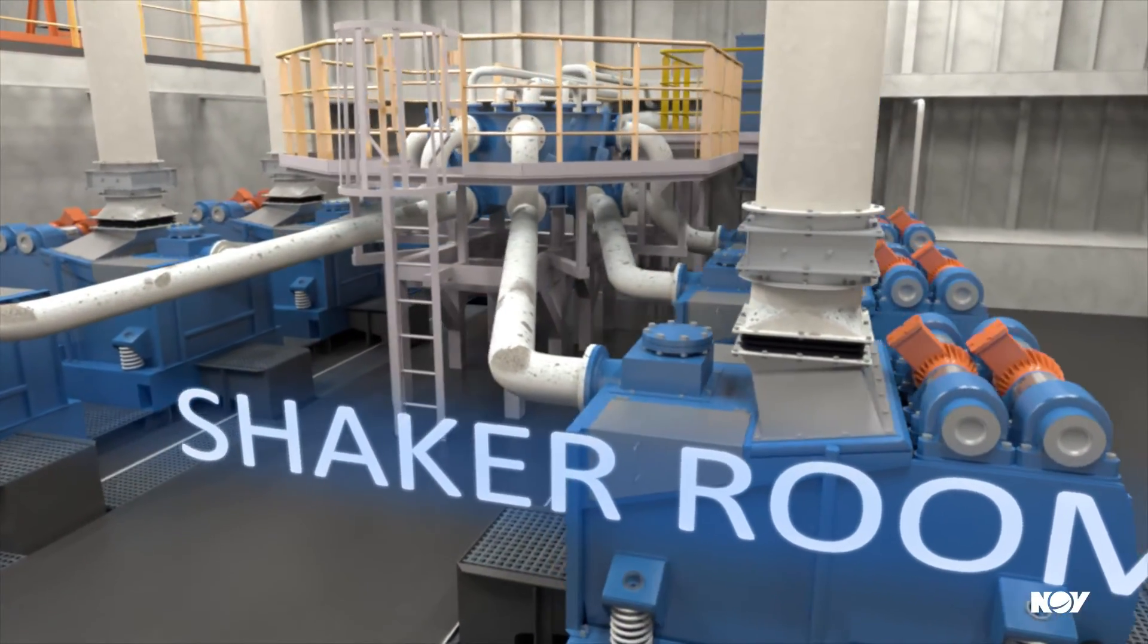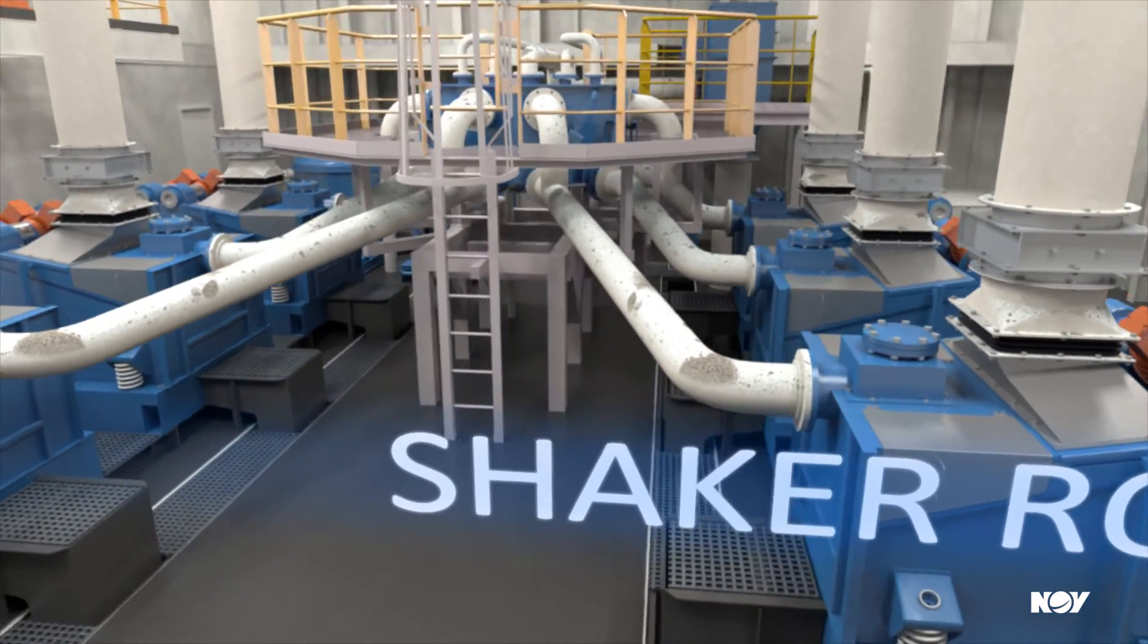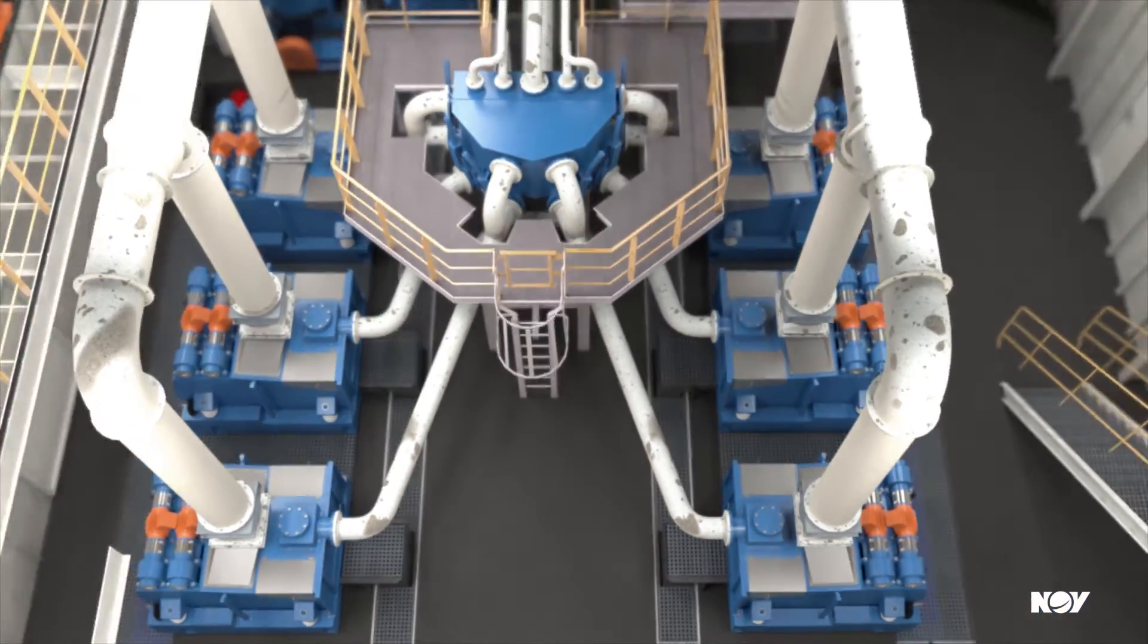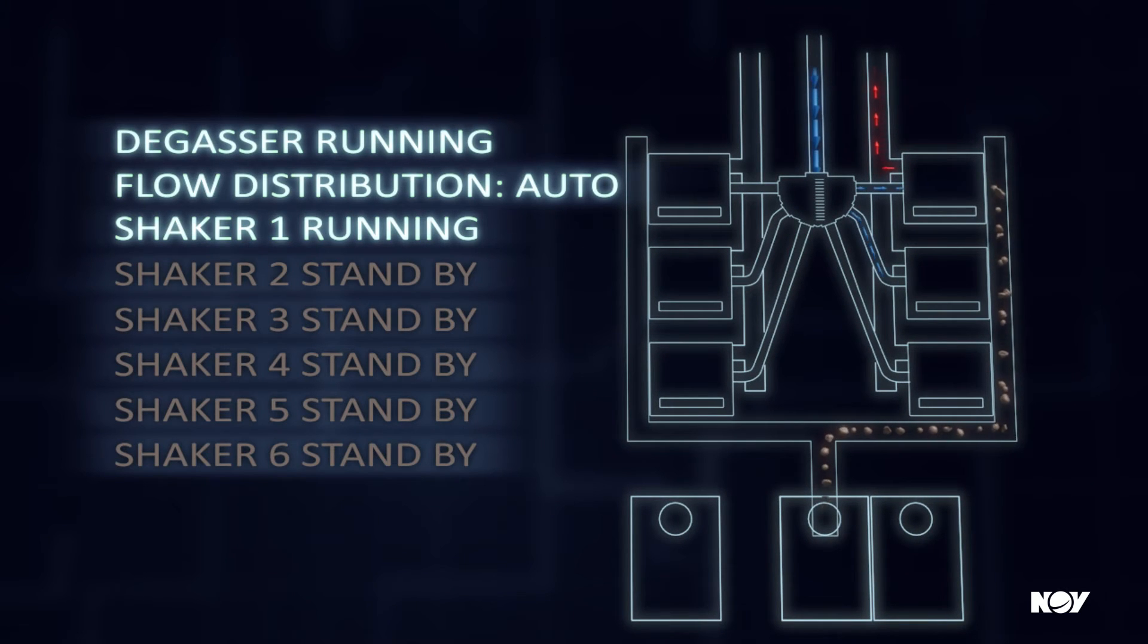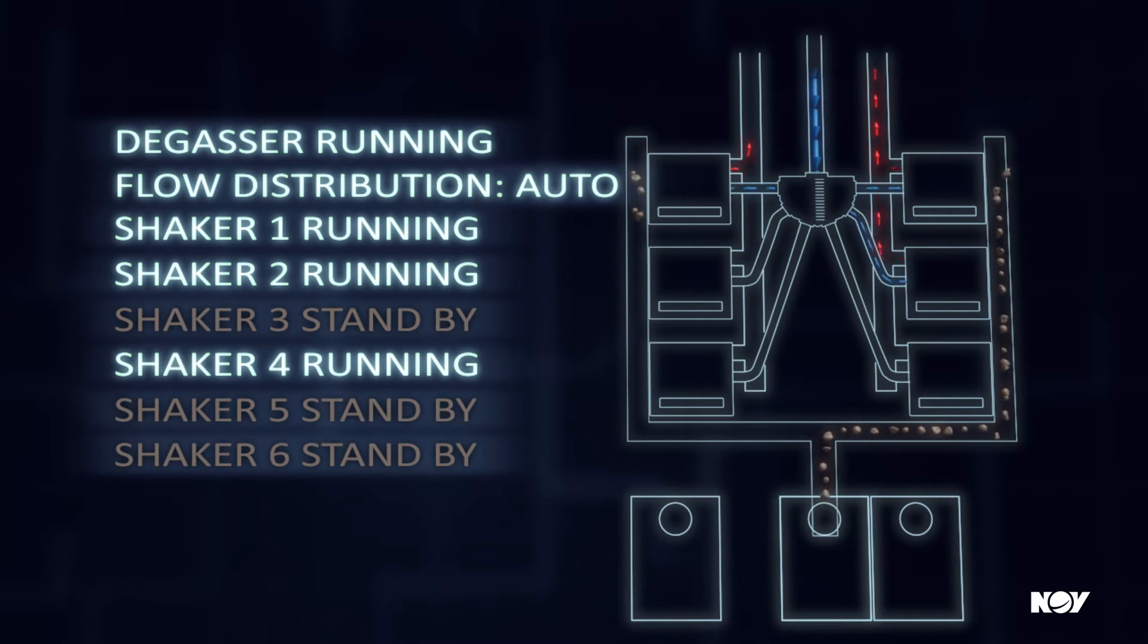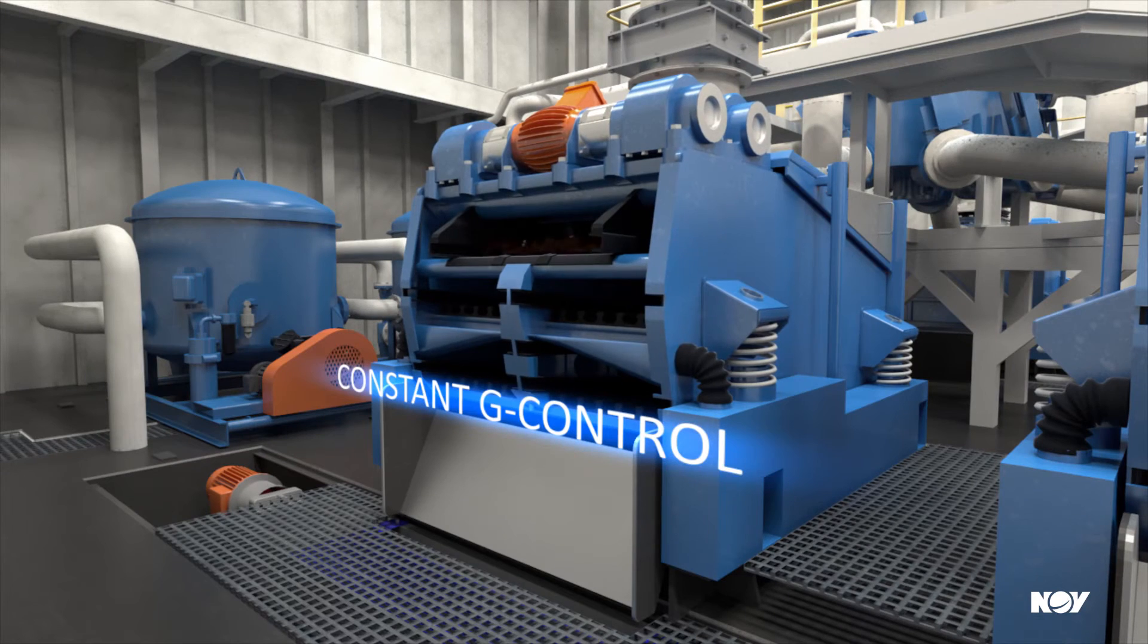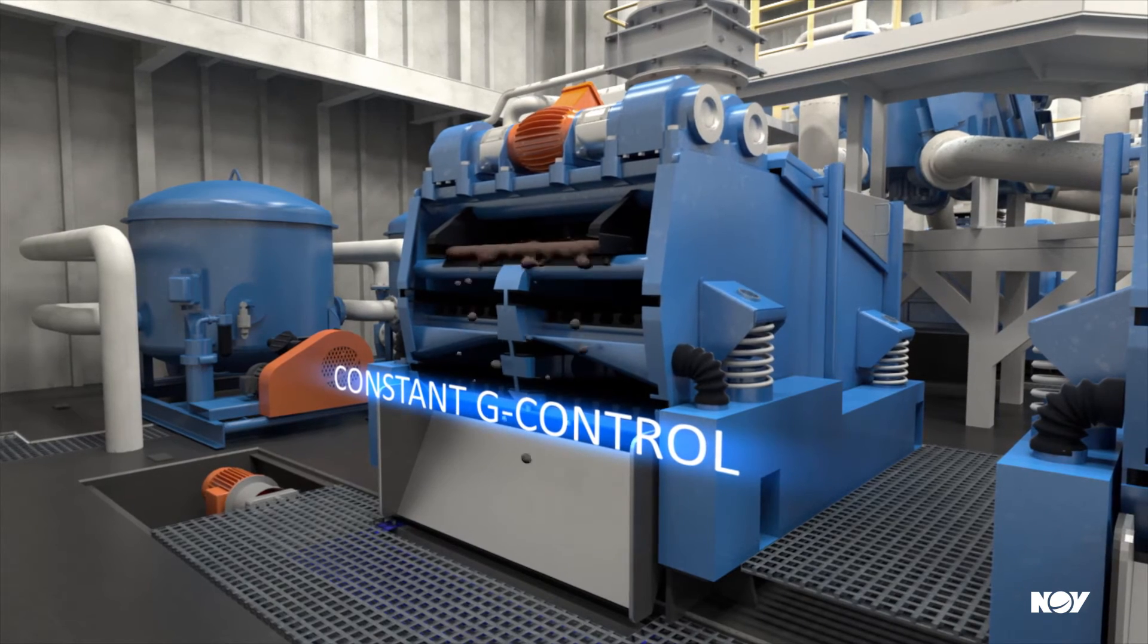The return mud is then evenly distributed onto each shaker by a spider or header box. The operator chooses to run the shakers in auto mode. Sensors and instruments continuously transmit data to the automatic shaker control system. The system will automatically interpret data. Gate valves and shakers will act accordingly to optimize solids control efficiency.